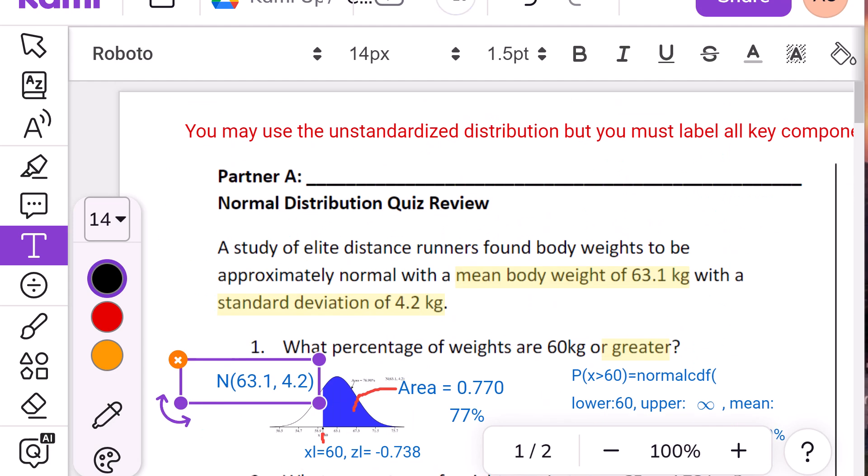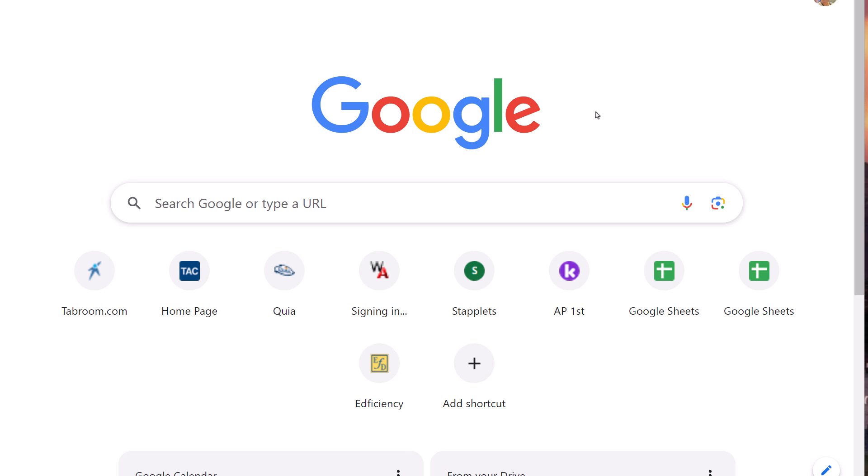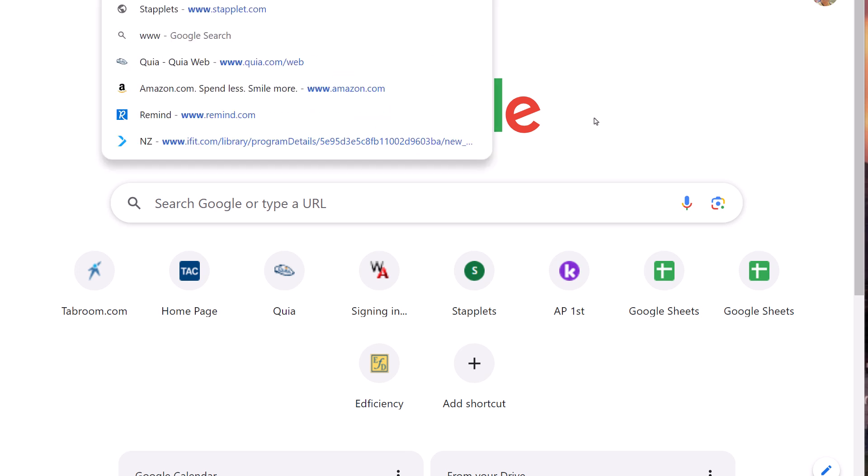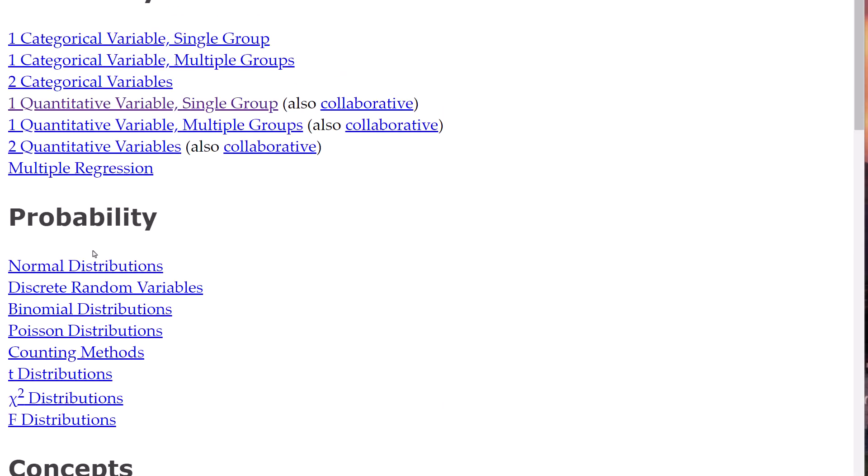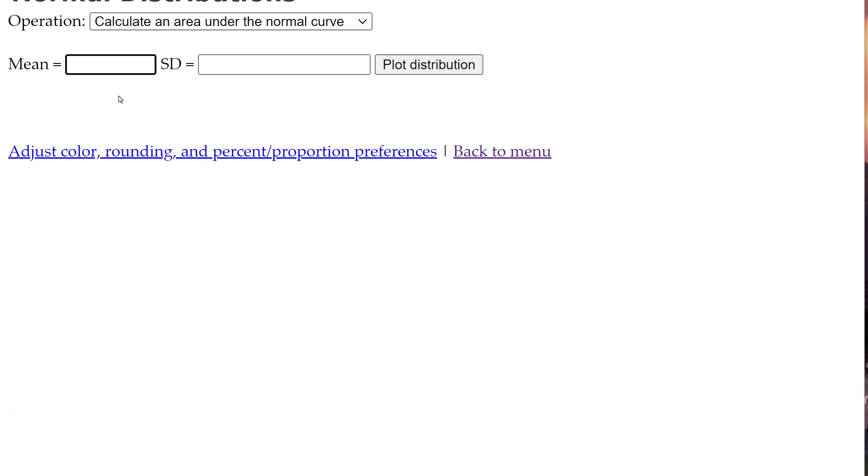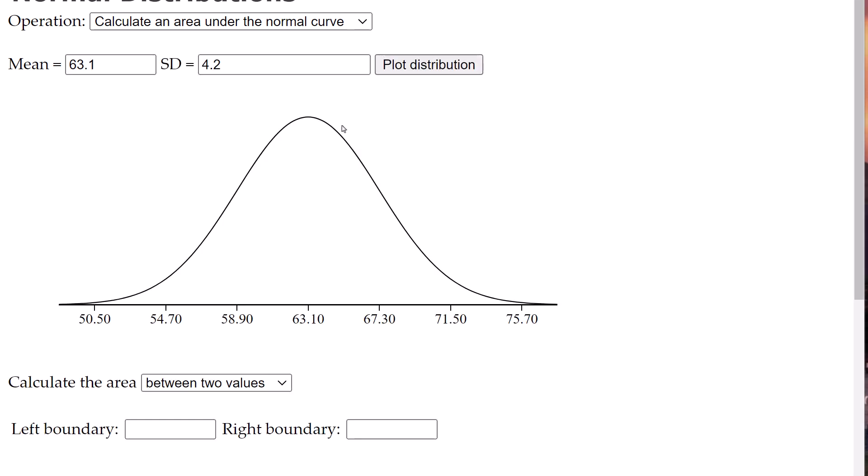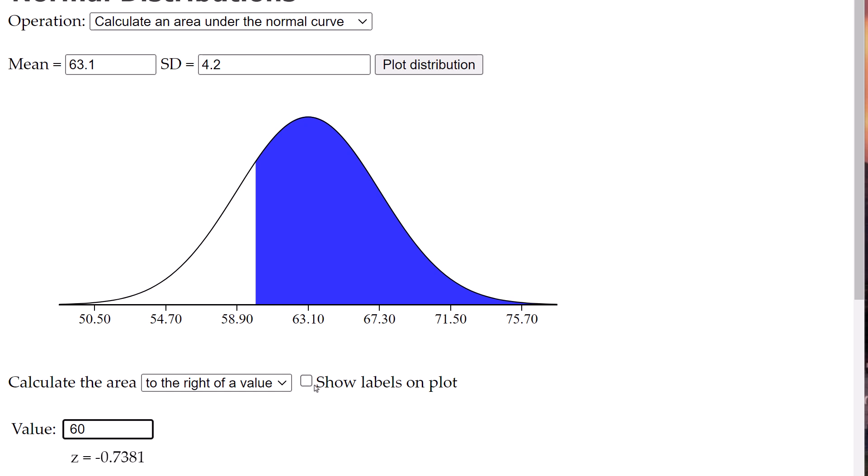By the way, if you're doing these with Stapplet, let me just go ahead and pull up the Stapplet, which is fine. Some of you don't even use it, which is fine too. But I do like using it. I think it's 63.1 and 4.2 plot distribution. And for the first one, we said to the right of 60. The thing I love about Stapplet and why I encourage you to use it, even though you don't get to use it on the AP exam, is if you click on the show labels on plot right here, it shows exactly what you want to do for the drawing.